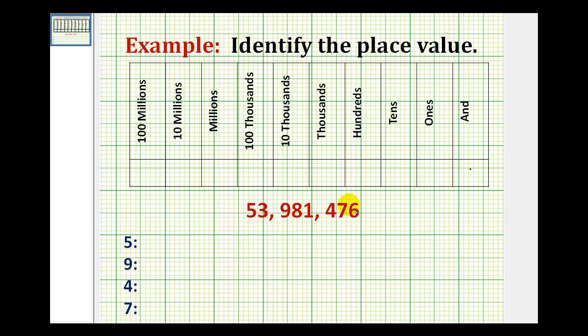Usually the decimal point for a whole number is not given, but it would be to the right of the ones place value here. So we're first asked to determine the place value of the five, which is here. So we can go ahead and just count over.